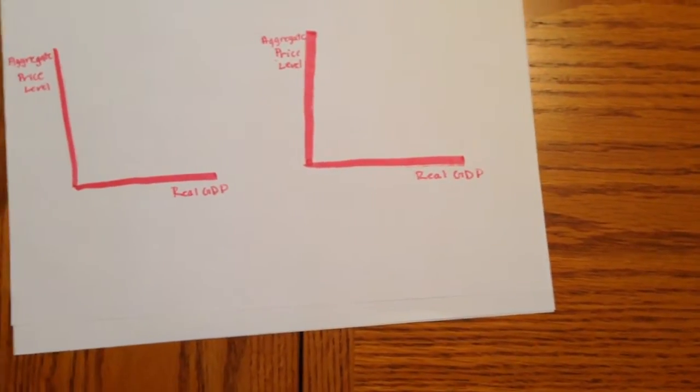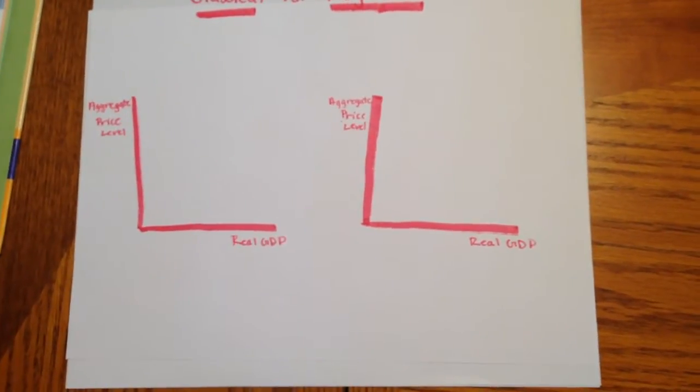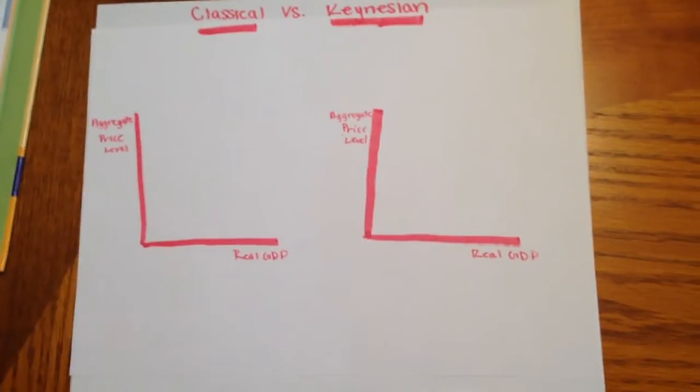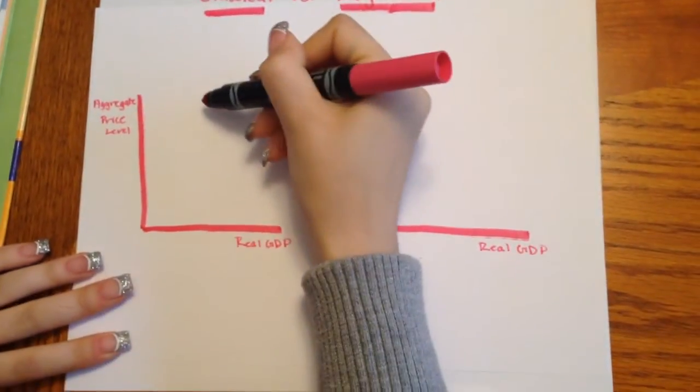Whereas after the 1930s when Keynes came into the picture, they believed that government intervention is needed in an economy. So pretty much the main difference is the short run aggregate supply.